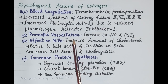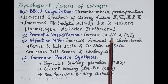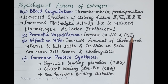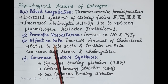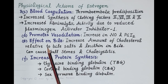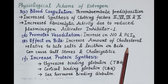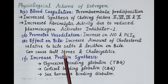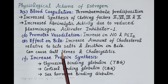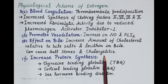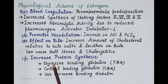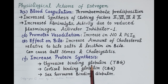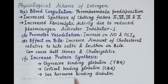Estrogen promotes vasodilation by increasing synthesis of nitric oxide and prostacyclin (PGI2), which are potent vasodilators. Regarding bile, estrogen increases the amount of cholesterol relative to bile salts and lecithin in the bile; this increased cholesterol causes crystallization leading to formation of gallstones, which can further cause inflammation of the gallbladder — cholecystitis. Estrogen also increases protein synthesis, inducing increased synthesis of thyroxine-binding globulin, cortisol-binding globulin, and sex hormone-binding globulin.